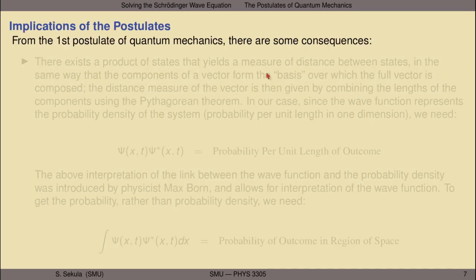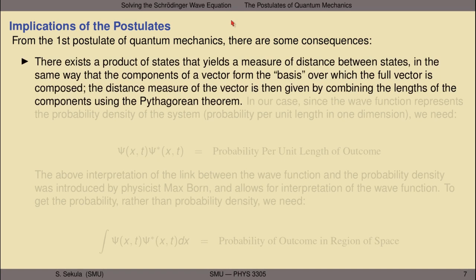From the first postulate of quantum mechanics, there exists a product of states that yields a measure of distance between states. For a state represented by a wave function psi, there is some product of that wave function that gives a real-valued measure — effectively the distance between possibilities in the system. This is analogous to how components of a vector form a basis over which the full vector is composed, and the distance measure is given by combining component lengths using the Pythagorean theorem.